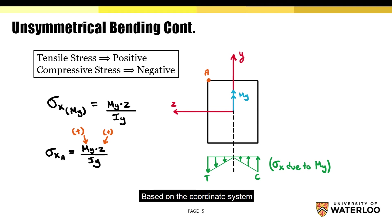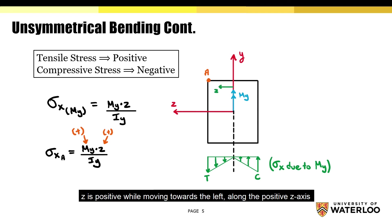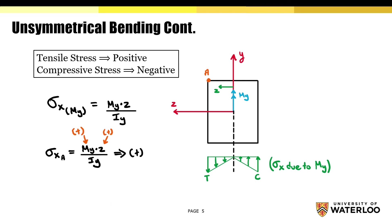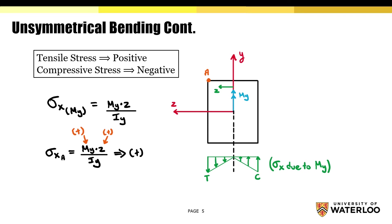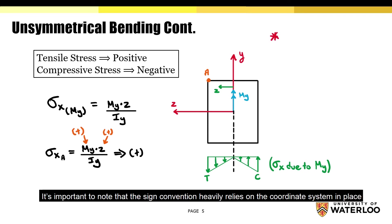Based on the coordinate system, z is positive while moving towards the left along the positive z axis. Now, if we multiply My and z together, notice how the value is positive. And this makes sense because point A is in tension, and so we won't be needing the negative 1. It's important to note that the sign convention heavily relies on the coordinate system in place.